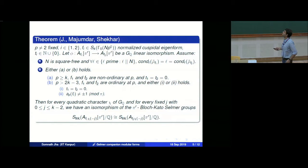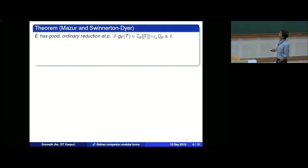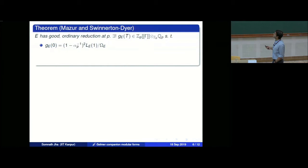Now let me go to another motivation — the link with p-adic L-functions. I recall the definition of the p-adic L-function just for an elliptic curve for notational convenience. Suppose E is an elliptic curve with good ordinary reduction at p. Then there is a power series in the Iwasawa algebra tensored with Q_p, which has the following interpolation property. By results of Shimura, the complex Hecke L-function of the elliptic curve, its value at 1 divided by the period, equals g(0) — the value of this power series at 0.